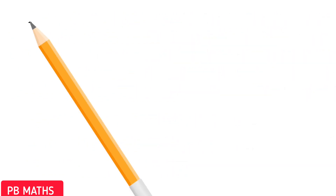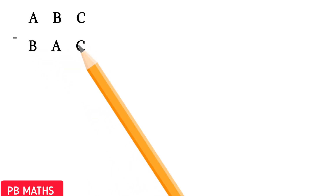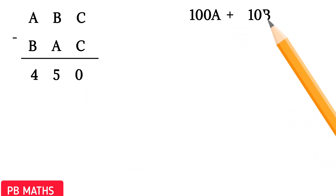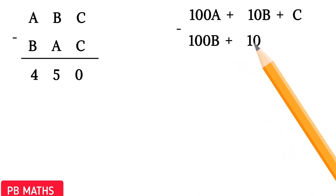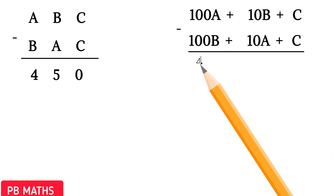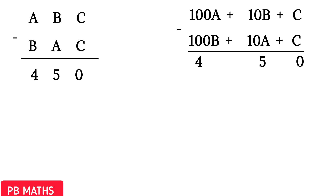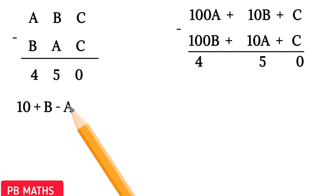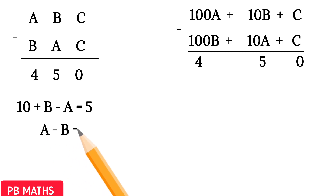It is also given that ABC minus BAC equals 450. Writing these digits with respect to their places: 100A + 10B + C minus (100B + 10A + C) equals 450. C minus C gives 0. In the 10th place, since A is greater than B, there must be a carry over, so 10 + B minus A gives 5, which means A minus B equals 5. Let's call this equation 2.